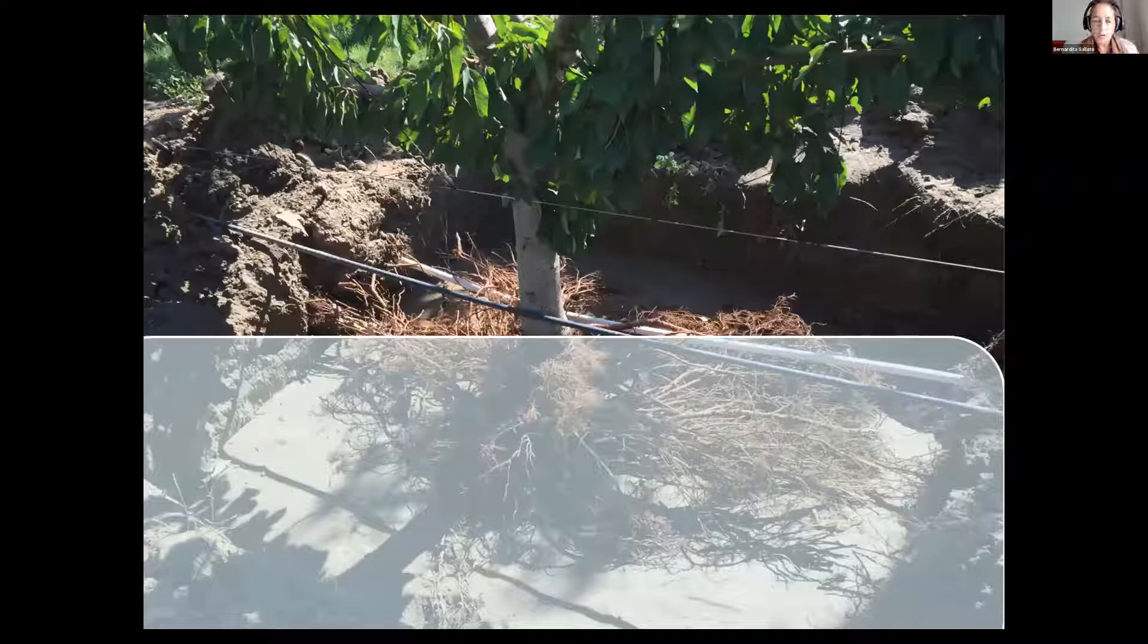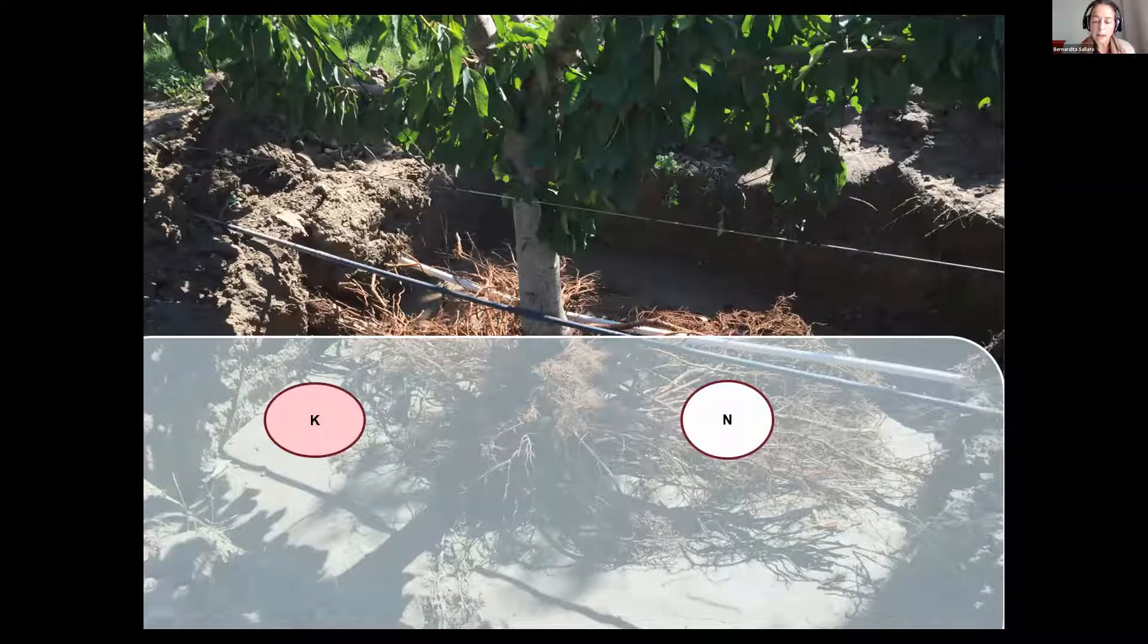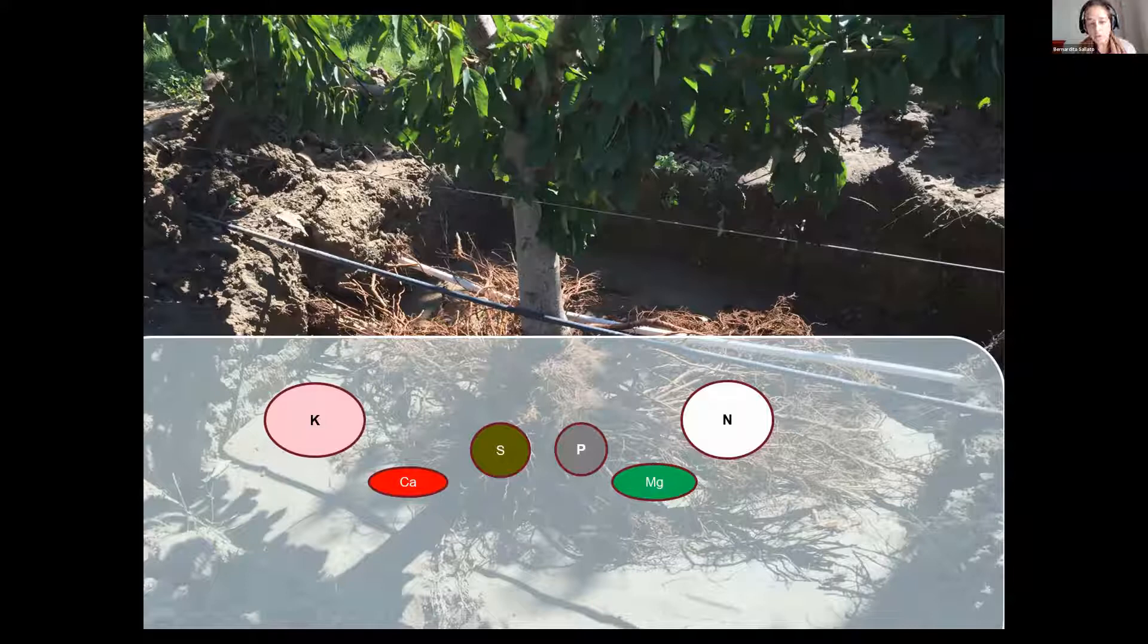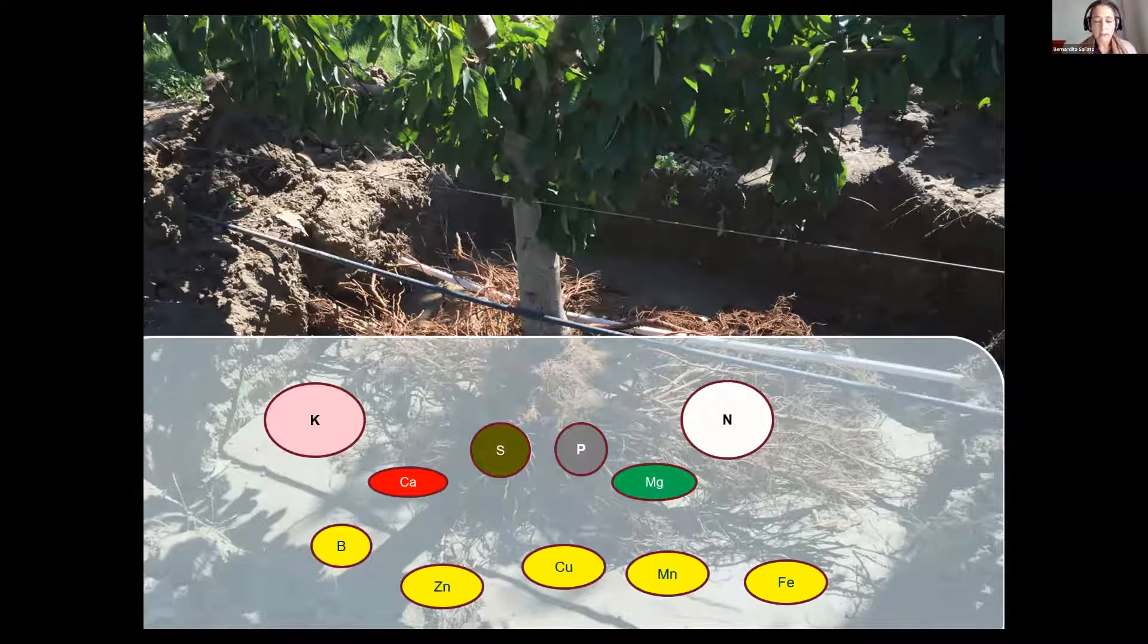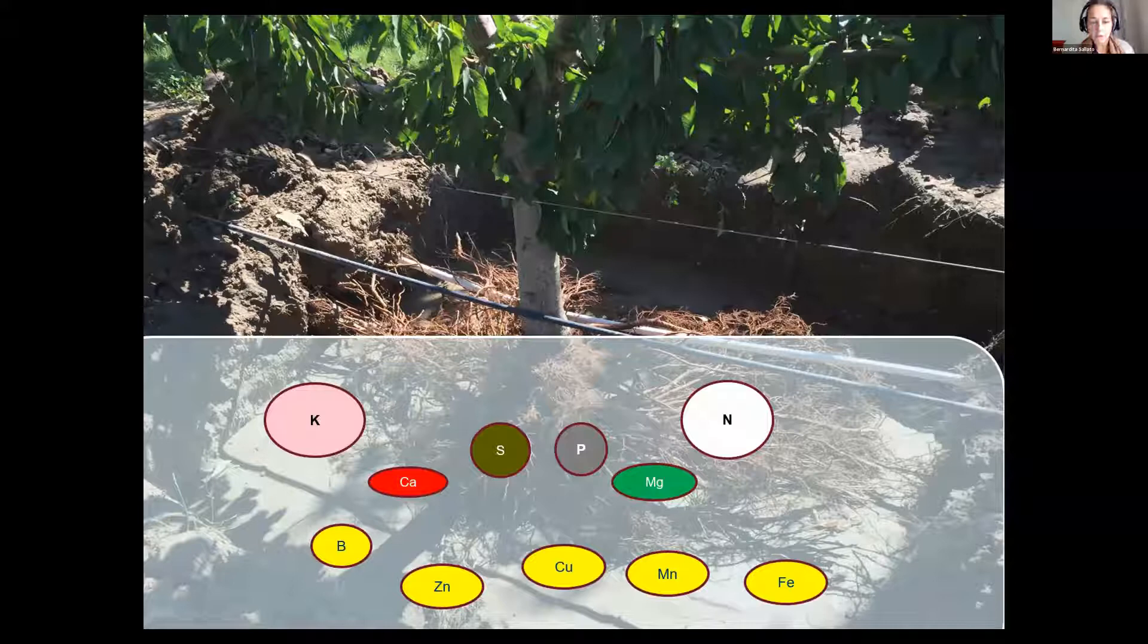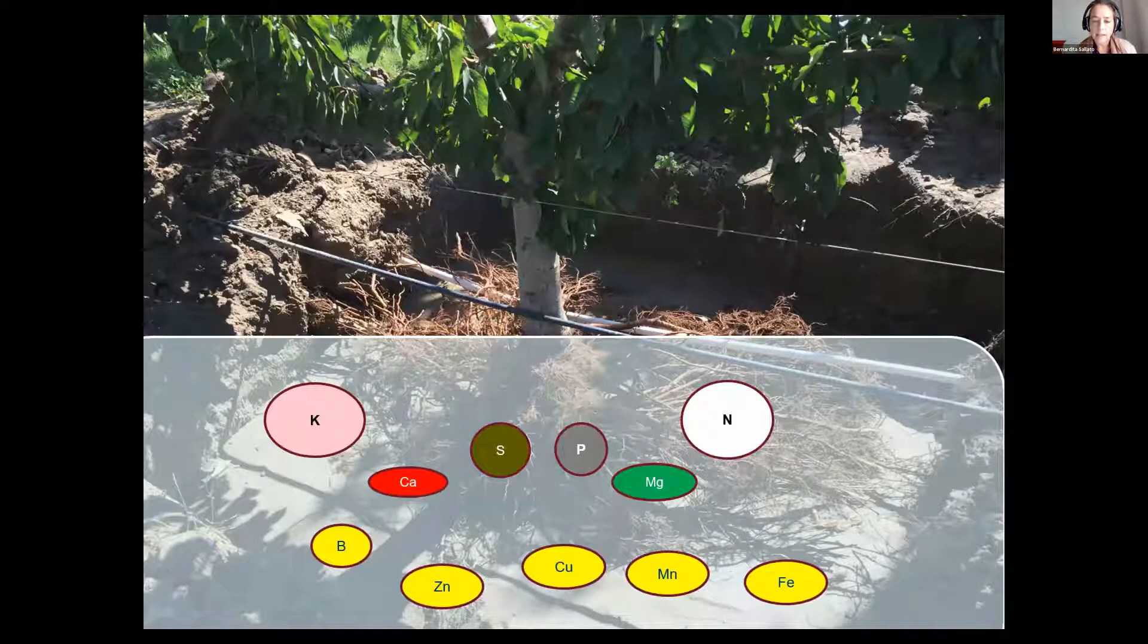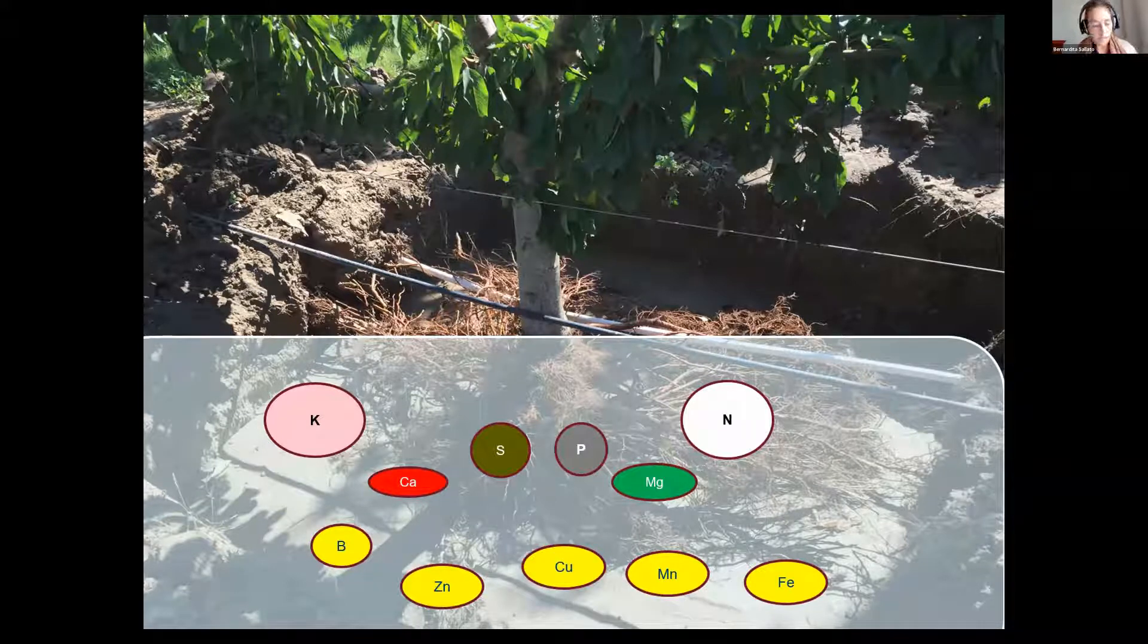But of course, we want to focus in this talk on what we call the essential nutrients, the macronutrients. The ones that are demanded in higher quantities are nitrogen and potassium. That's why I put them in bigger bubbles. But we also need to think about other essential macronutrients, we call them secondary: calcium, sulfate, phosphorus, and magnesium. And there's a lot of others, but some that are very important, especially for our region where we have alkaline soil, are the micronutrients: boron, zinc, copper, manganese, and iron. So why I put this slide in the roots is because these nutrients are mostly uptaken by the roots of the tree.